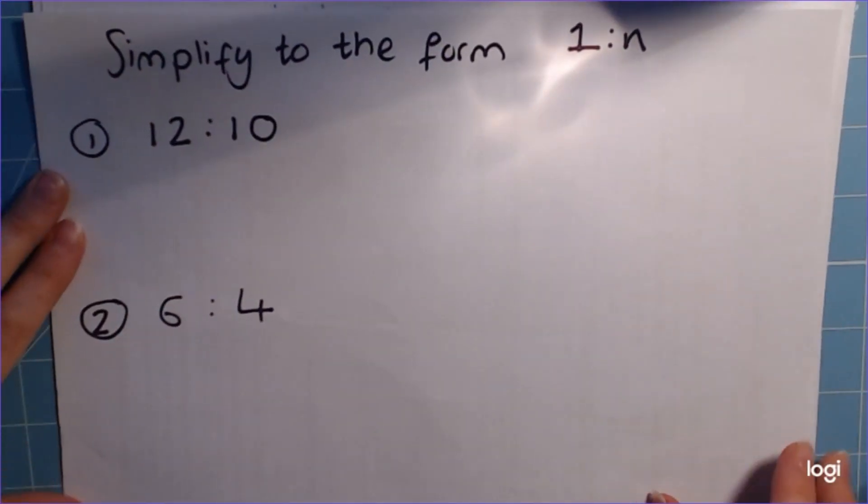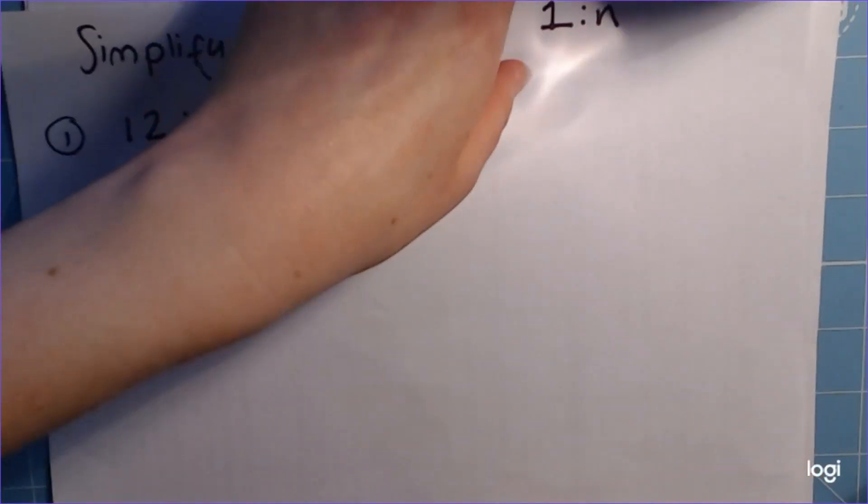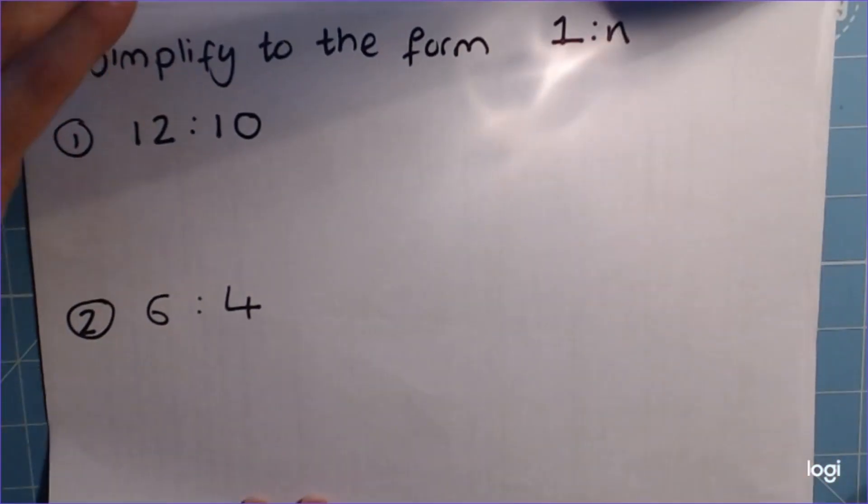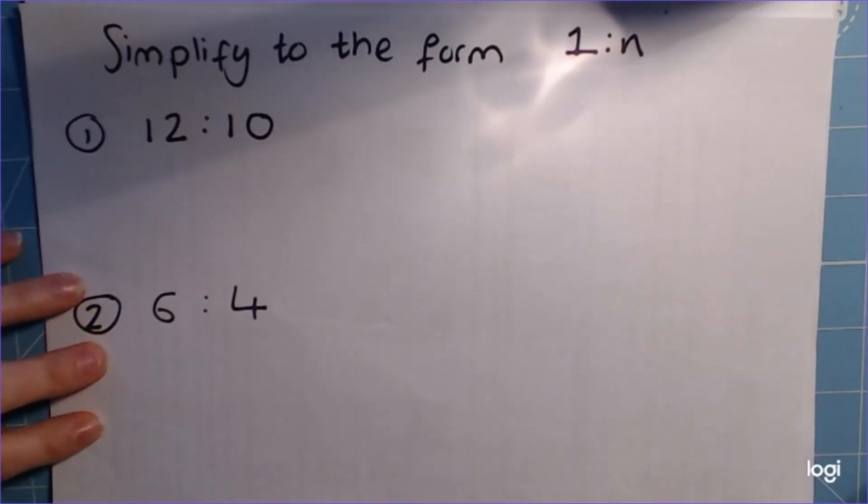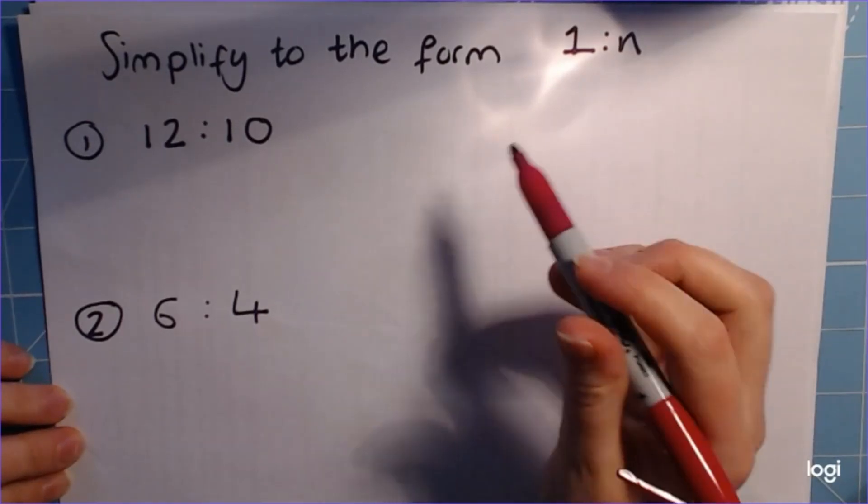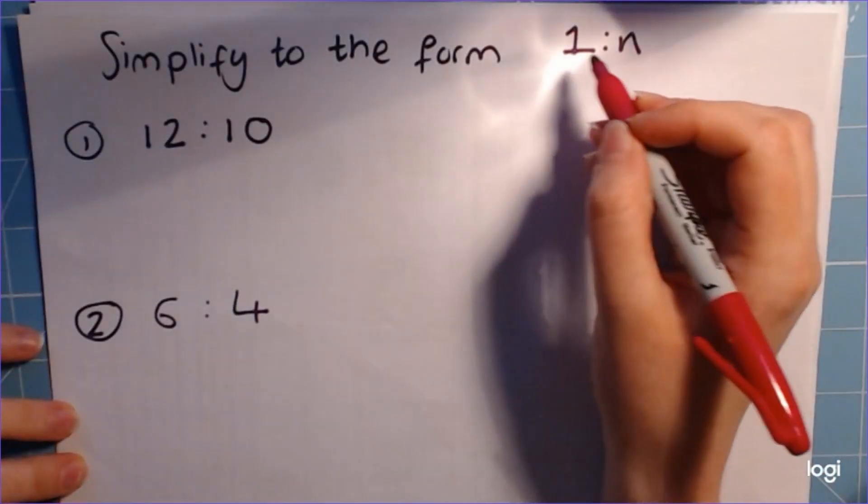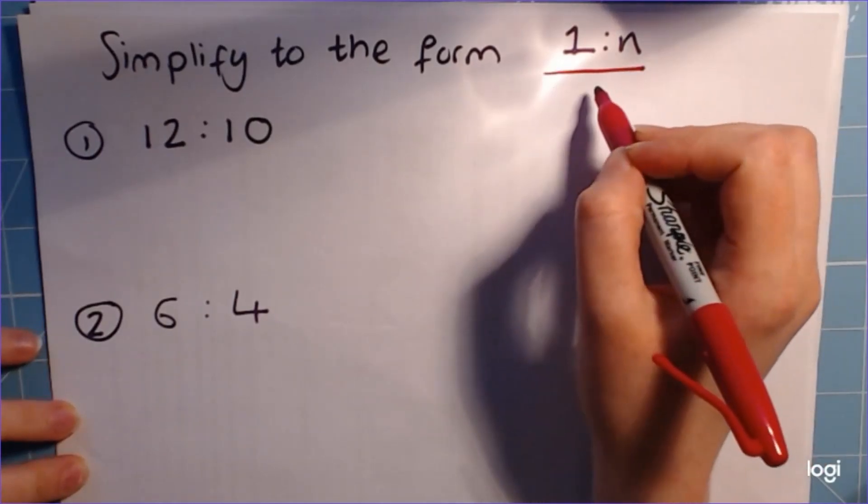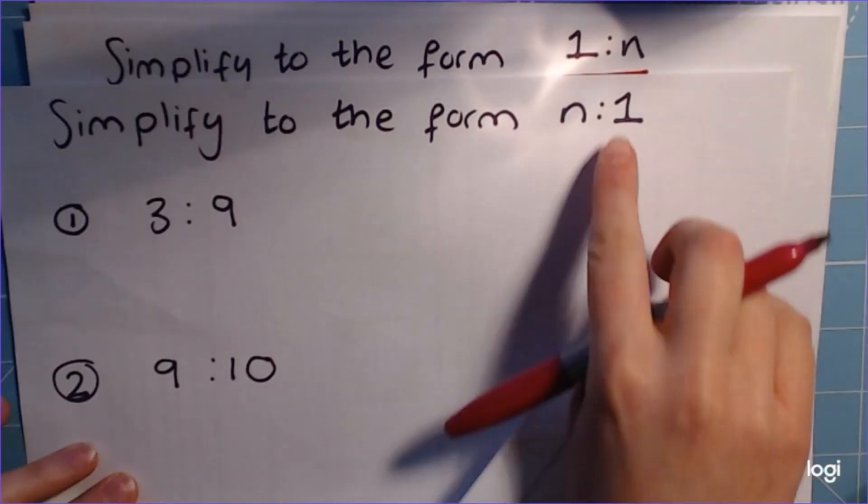So simplifying into the form 1 to n. Now I've told you in the past that ratios never ever should have decimals or fractions in, except in one special situation, and this is it. But it's only allowed when you're asked to put it in the form 1 to n or n to 1. We'll come to those next.